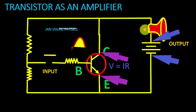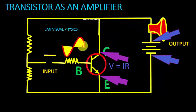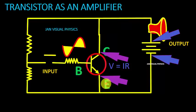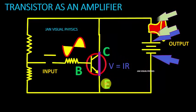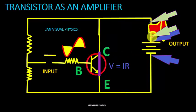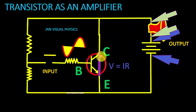We consider a sinusoidal signal at the base of our transistor. During the first positive half cycle, the base of the transistor is positive. This way the emitter-base junction becomes forward biased and the resistance of the transistor decreases — that is, the transistor becomes conductive. This way maximum portion of this voltage drops across our load and very small voltage drops across the transistor.